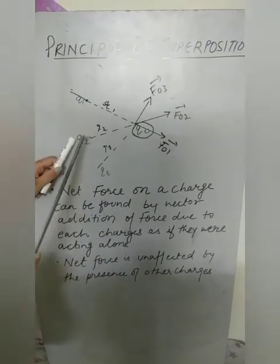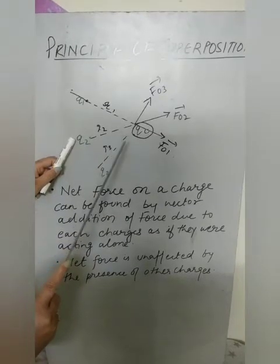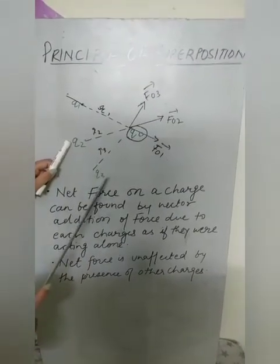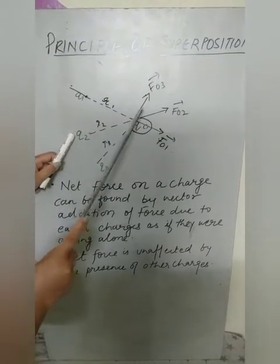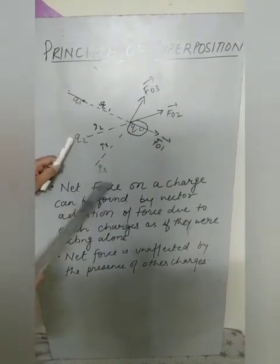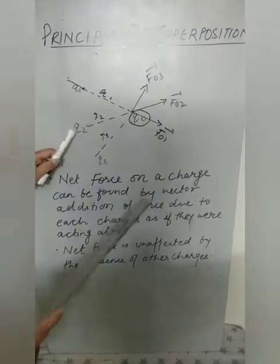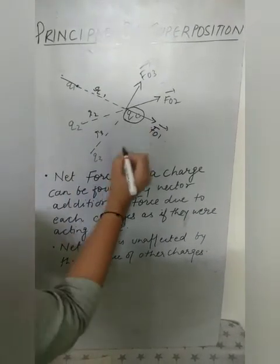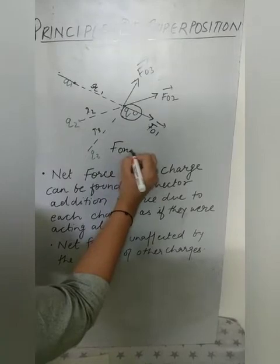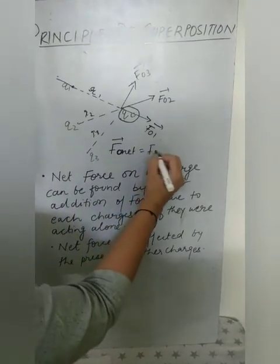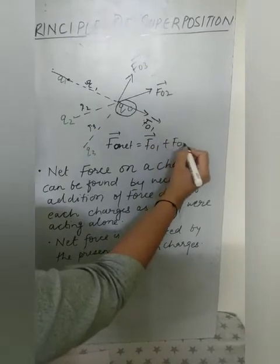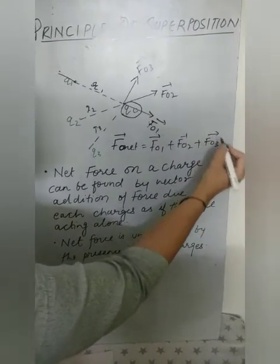For example, the force between q₀ and q2 is k·q₀·q2 / r2². If I add charge q3 to the system, this force between the two remains unaffected. Similarly, removing q3 leaves the force between the two unchanged. So to find the net force on q₀, we write: F_net on q₀ = F₀₁ + F₀₂ + F₀₃, depending on the number of charges present.